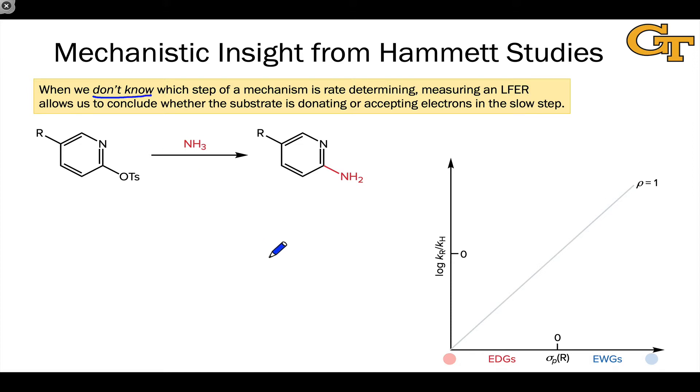In a mechanism where the substrate gives away electron density, gets it back, and maybe gives it away again, there are electron transfers back and forth in organic reaction mechanisms. It can be ambiguous whether the substrate is donating or accepting electron density in the slow step in those complex multi-step mechanisms.